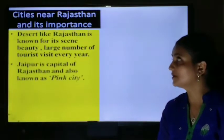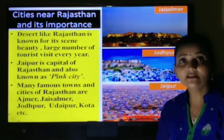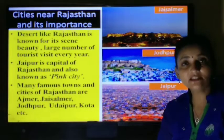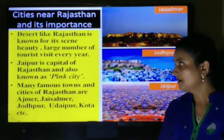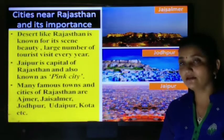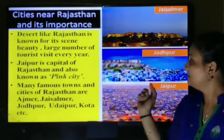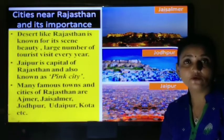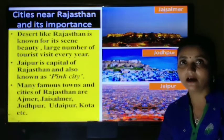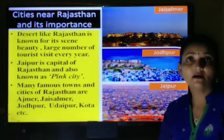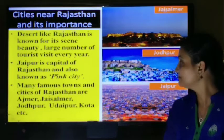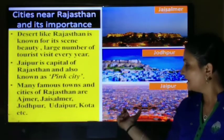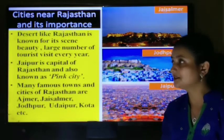Cities near Rajasthan and their importance: Rajasthan is known for its scenic beauty and large numbers of tourists visit every year. Jaipur is the capital of Rajasthan and is also known as the Pink City. Many famous towns and cities of Rajasthan are Ajmer, Jaisalmer, Jodhpur, Udaipur, and Kota. Jaisalmer is also known as the Golden City and has many forts, palaces, and historical temples. Jodhpur is also known as the Blue City due to its large number of blue-painted houses. Jaipur is called the Pink City and is the capital of Rajasthan.